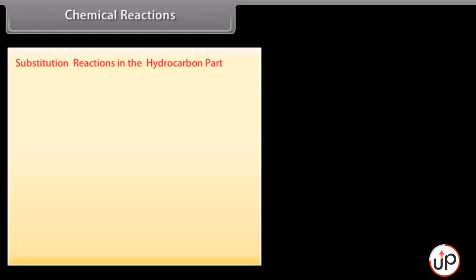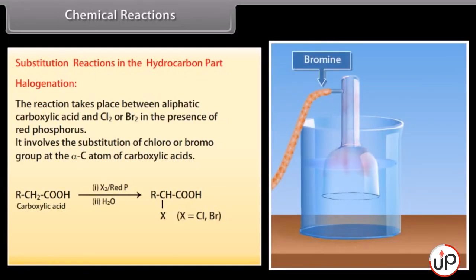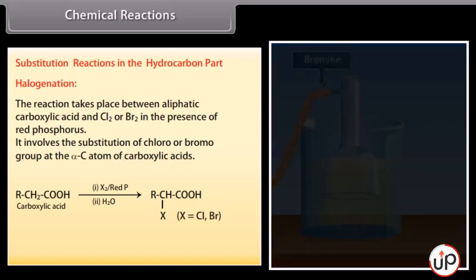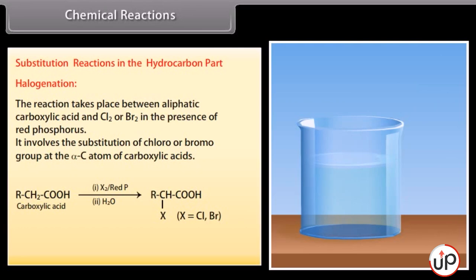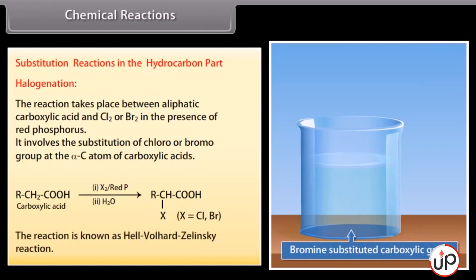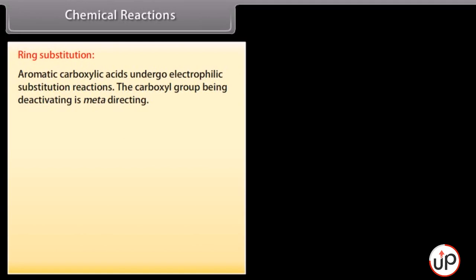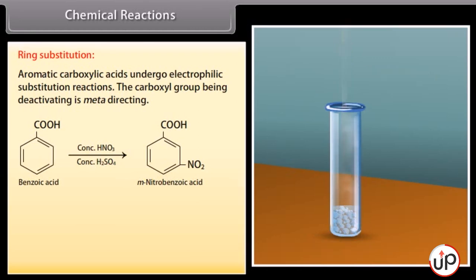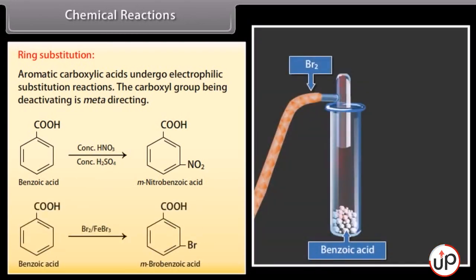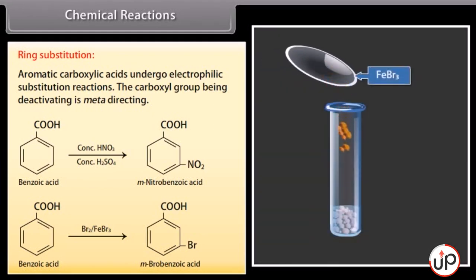Substitution reactions in the hydrocarbon part. Halogenation: the reaction takes place between aliphatic carboxylic acid and chlorine or bromine in the presence of red phosphorus. It involves the substitution of a chloro or bromo group at the alpha carbon atom, known as the Hell-Volhard-Zelinsky reaction. Ring substitution: aromatic carboxylic acids undergo electrophilic substitution reactions; the carboxyl group is deactivating and meta-directing. Benzoic acid with concentrated nitric and sulfuric acid is converted to meta-nitrobenzoic acid, and with bromine and ferric bromide it is converted to meta-bromobenzoic acid.